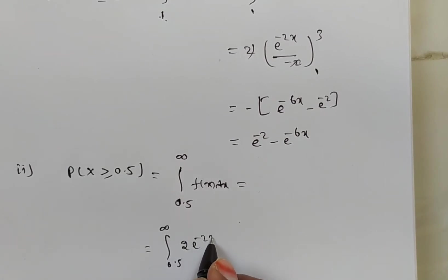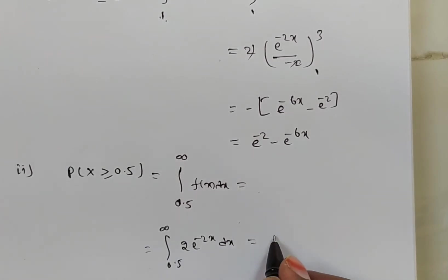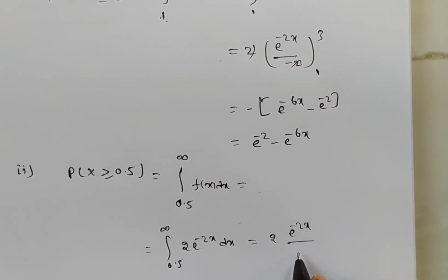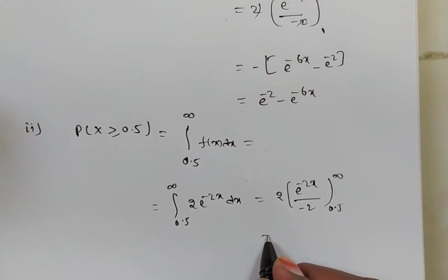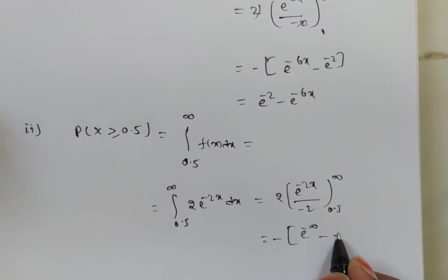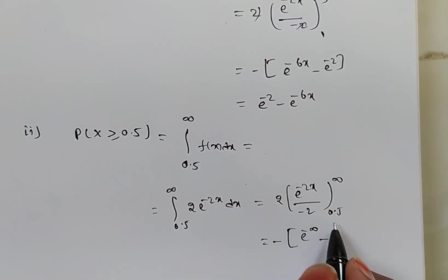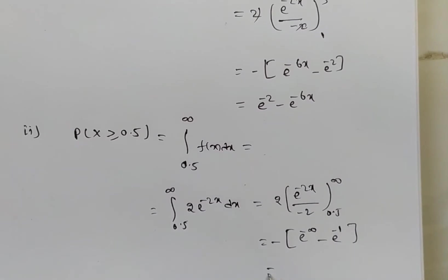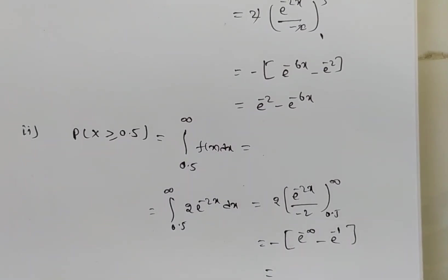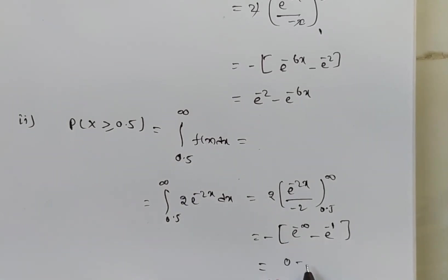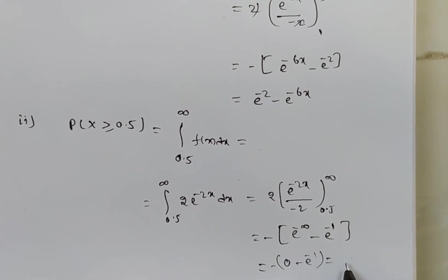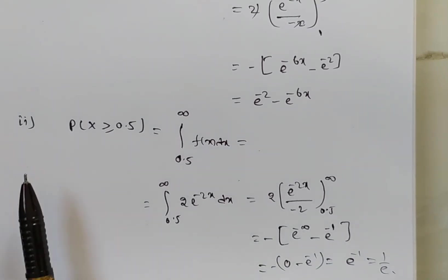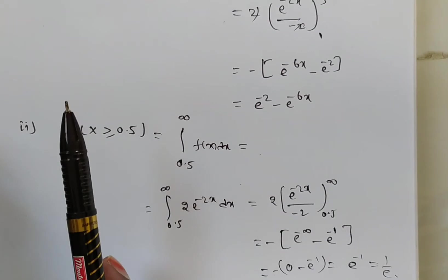So we compute the integral from 0.5 to infinity of 2e^(-2x) dx. This equals 2 times e^(-2x) divided by minus 2, evaluated from 0.5 to infinity. We get: minus [e^(-∞) minus e^(-1)]. Since e^(-∞) equals 0, this gives minus [0 minus e^(-1)], so the result is e^(-1), which is 1/e.